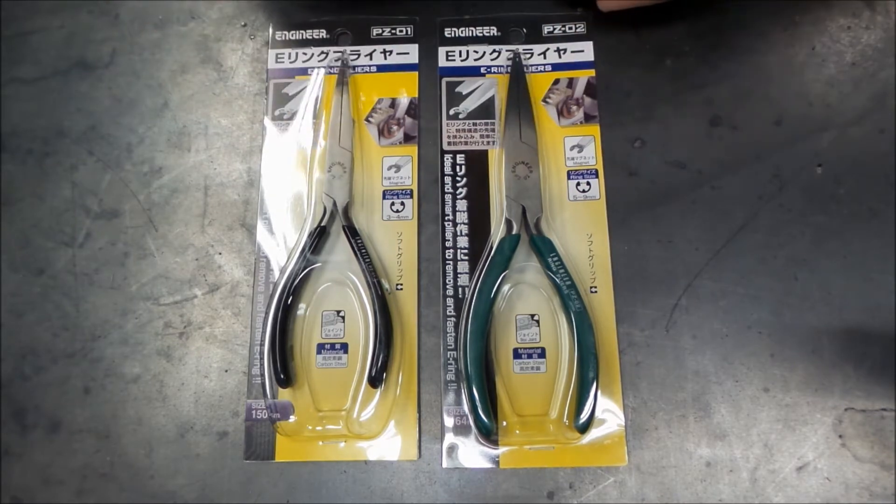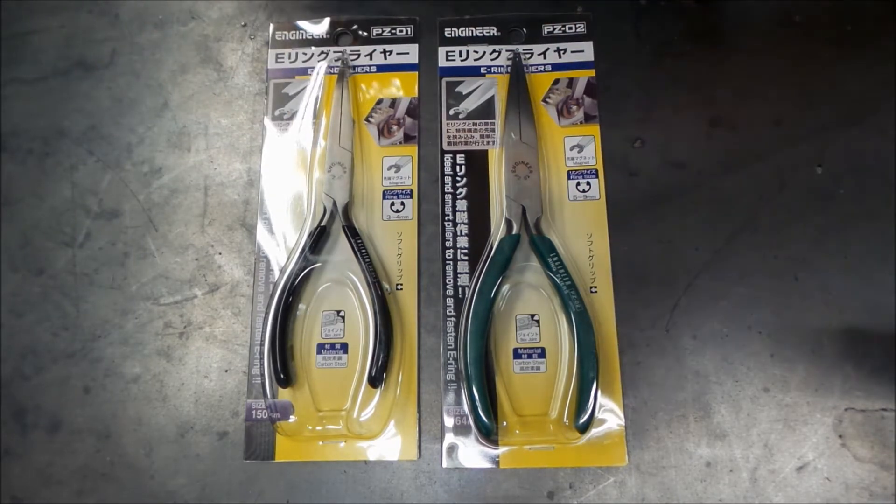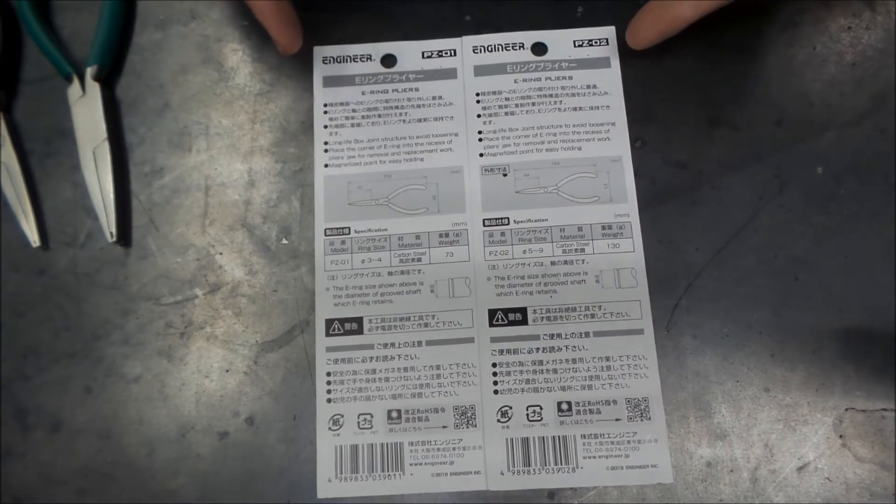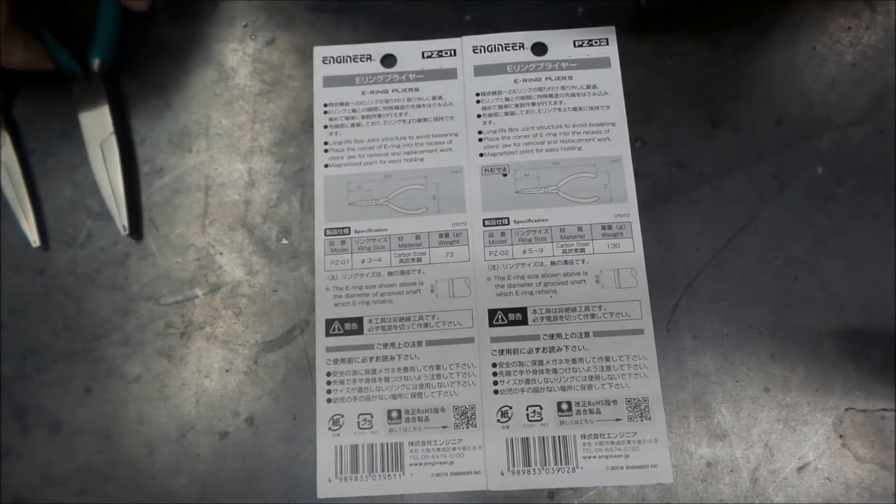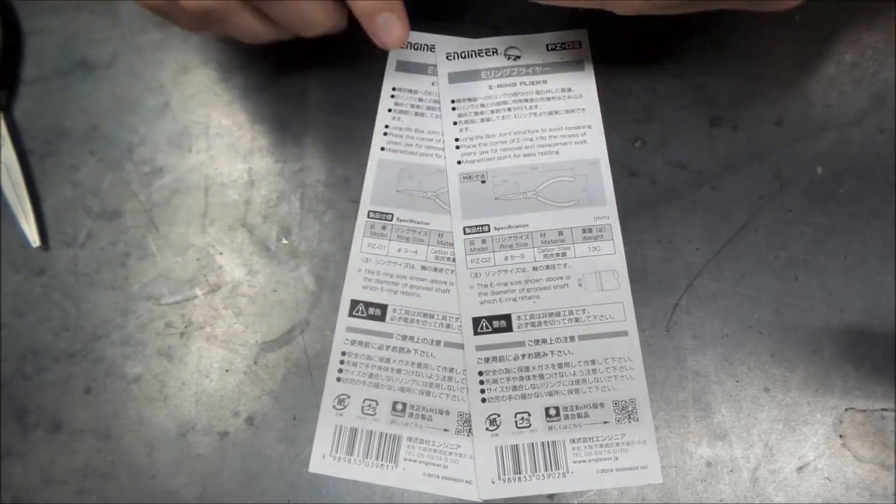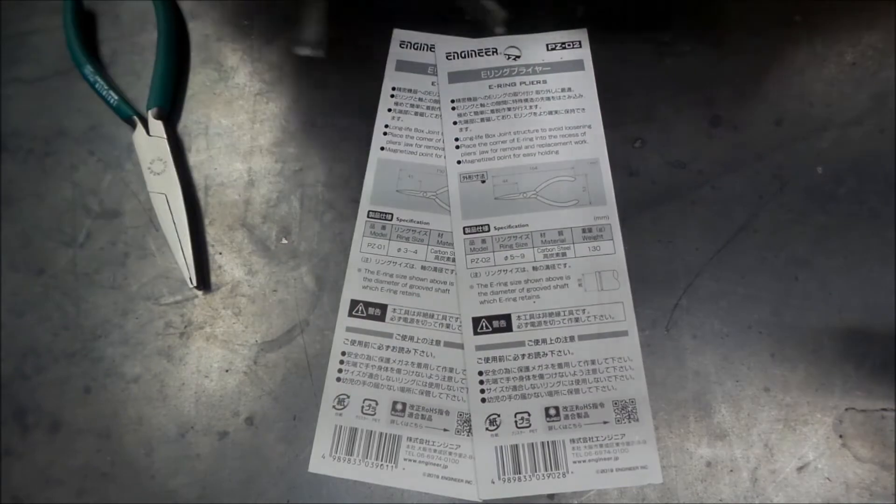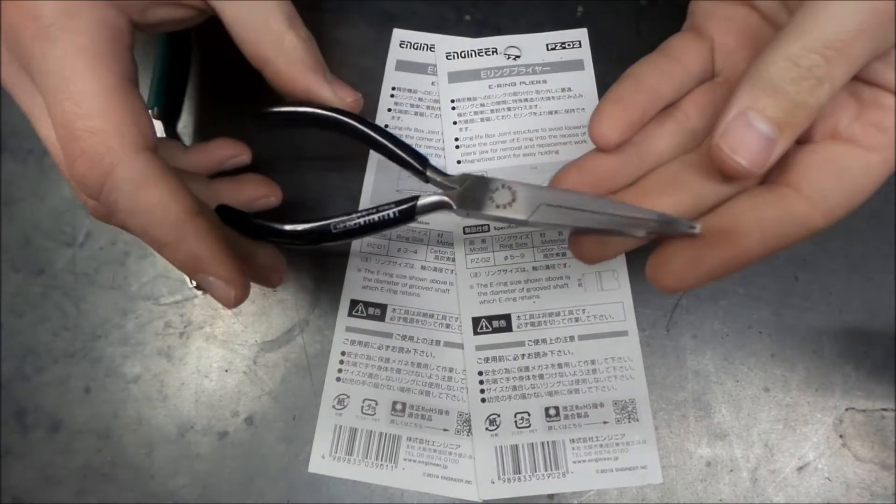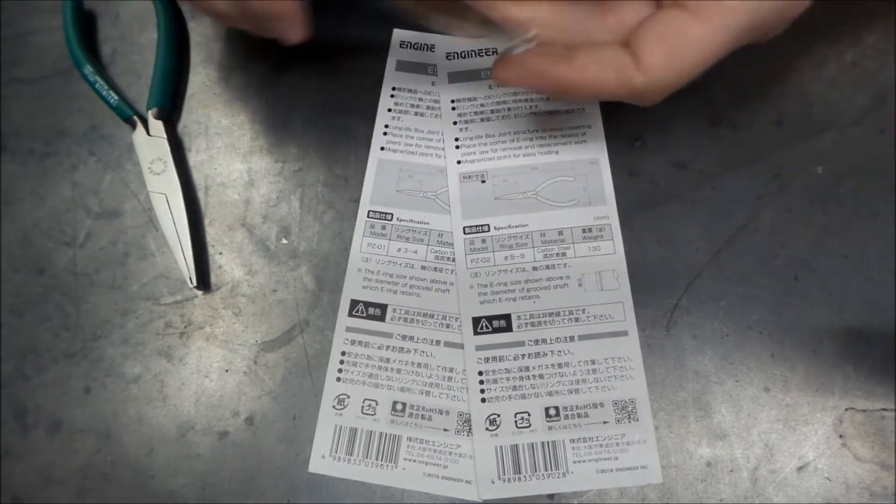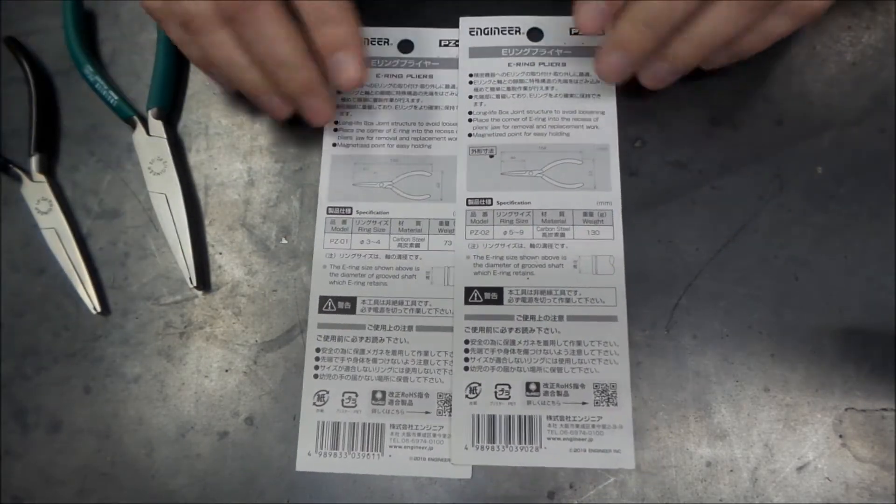Let's get them out of the packages here and see what they look like. First thing off the bat, there's two different sizes - the larger size here, the PZ-02, and the smaller size, the PZ-01. I have to say they seem very well made. We'll get back to that.